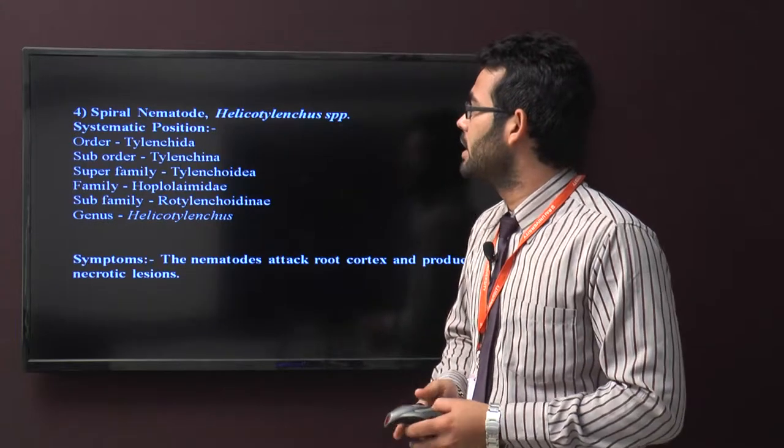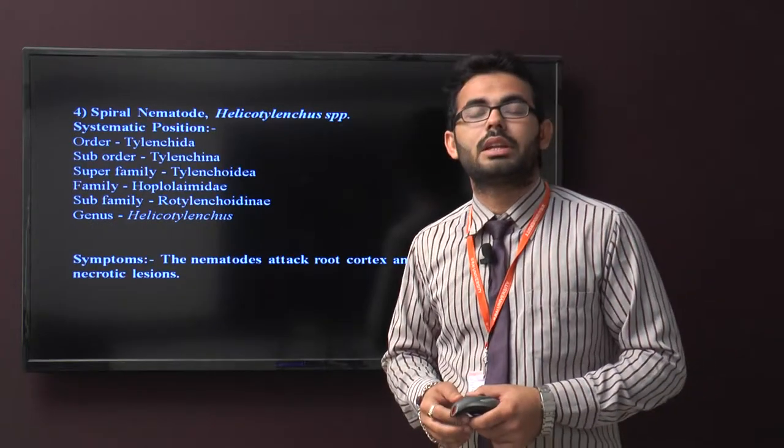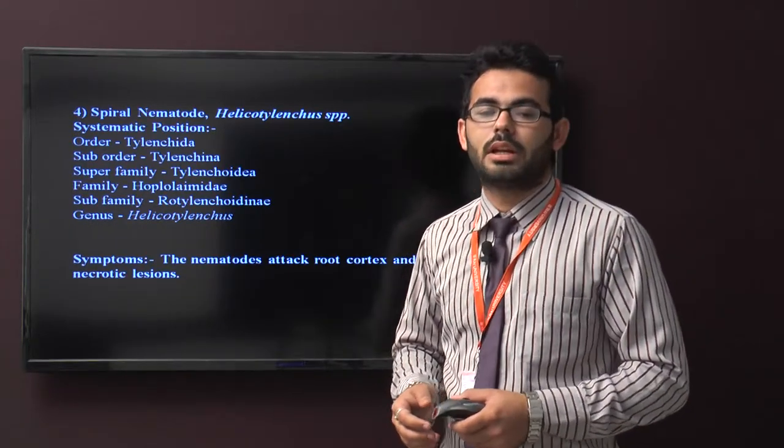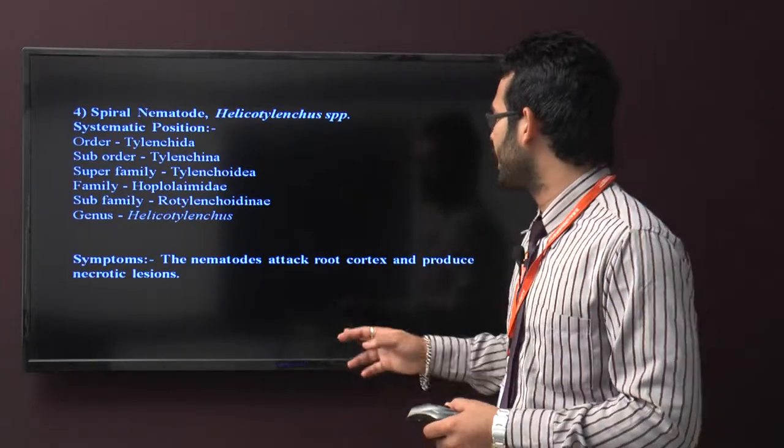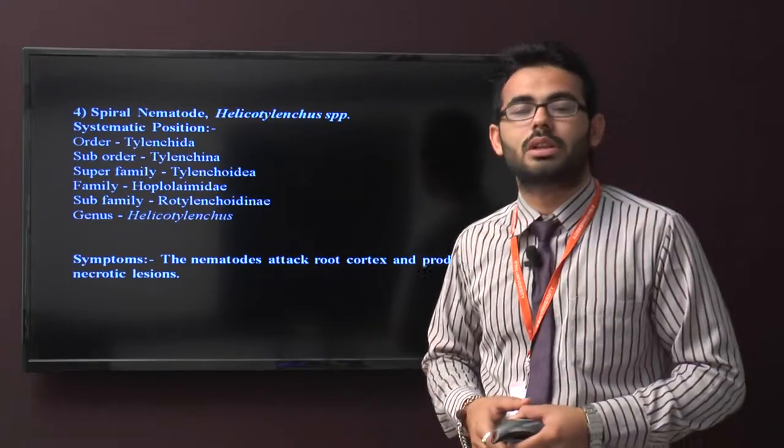Fourth is spiral nematode, scientific name Helicotylenchus species. Symptoms caused by this nematode include attack on root cortex producing necrotic lesions.